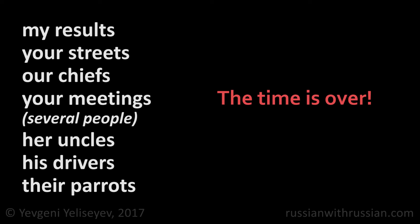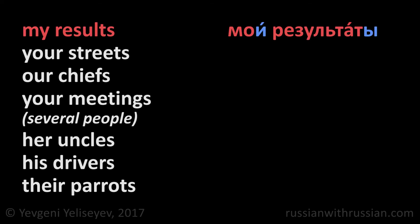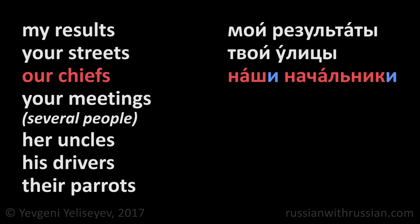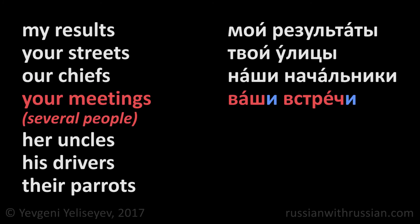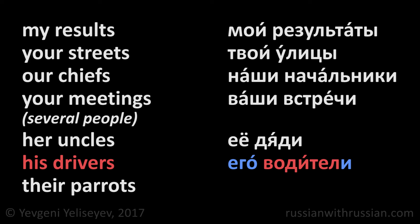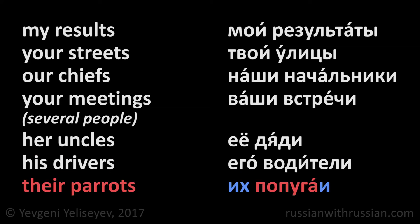The correct phrases are: мои результаты, твои улицы, наши начальники — because after к, г, and х we write and pronounce и instead of ы. Ваши встречи — because after hushing consonants we use the ending и. Её дяди — as you know, the pronouns его, её, and их don't change their forms. Его водители, and их попугаи.